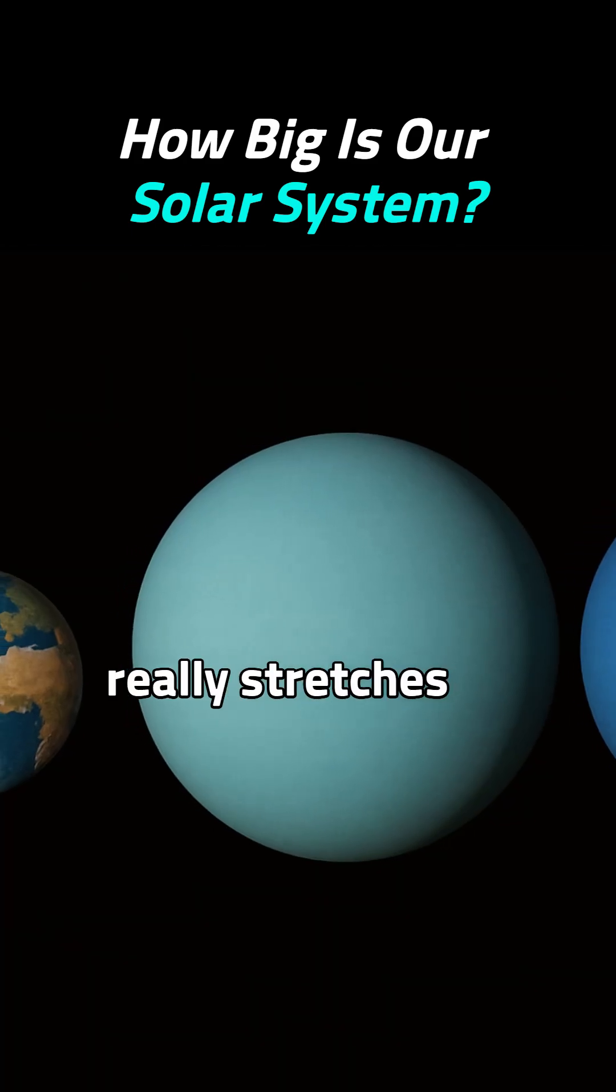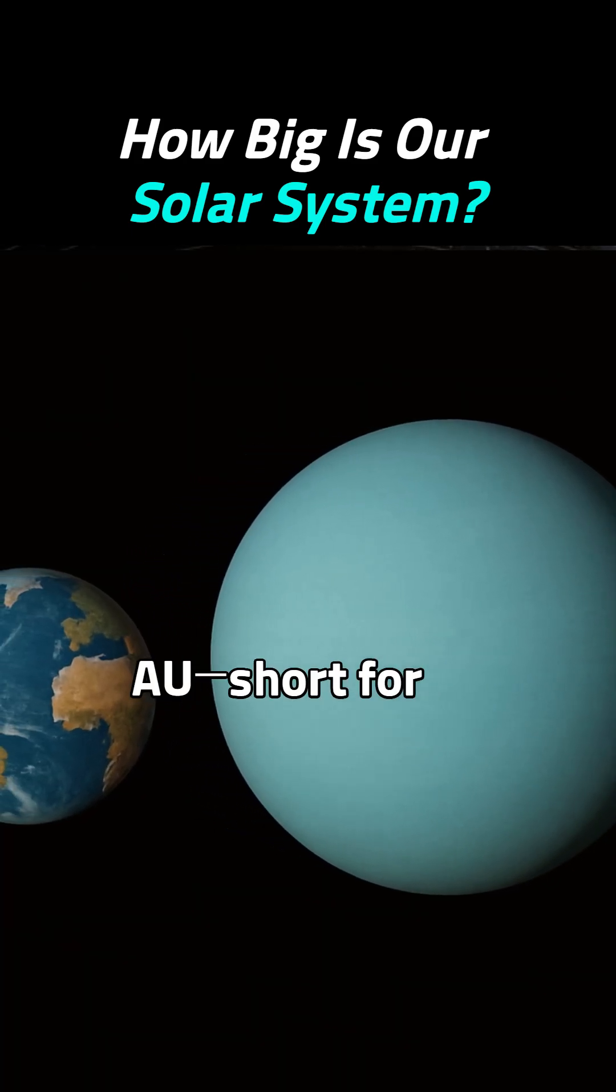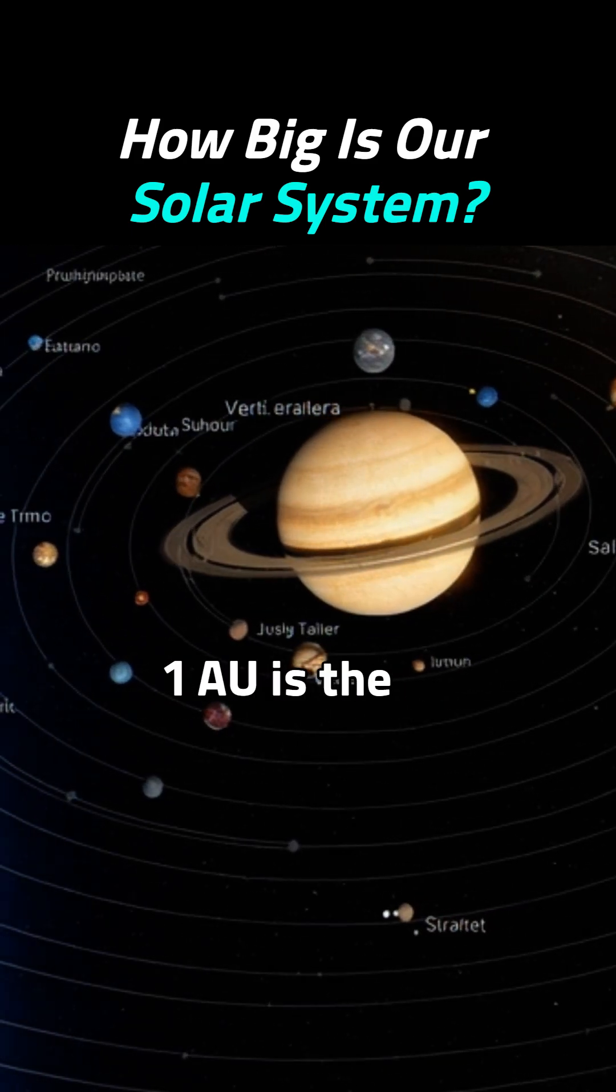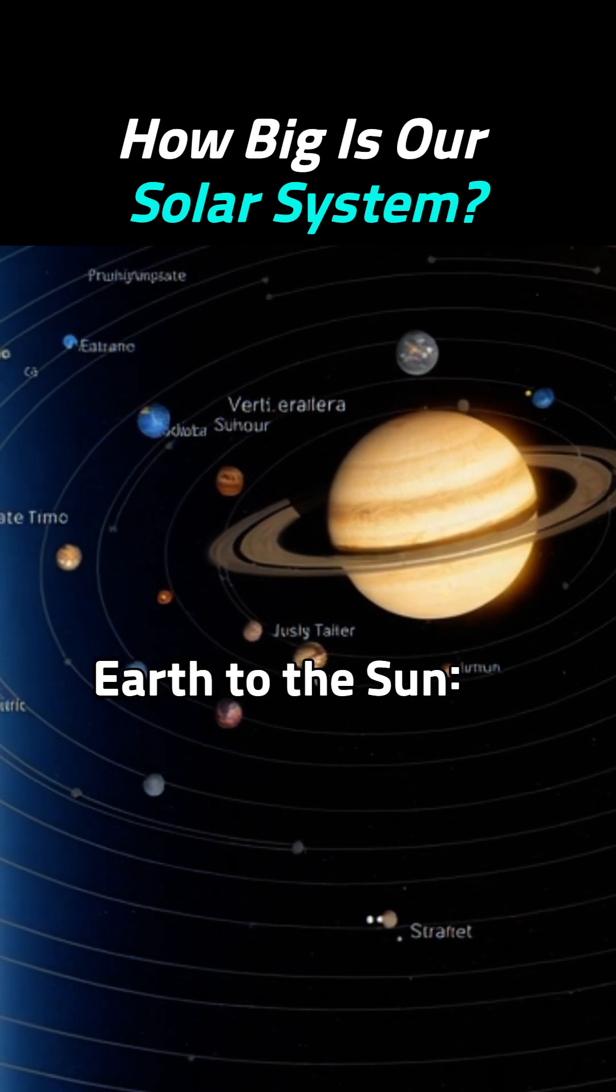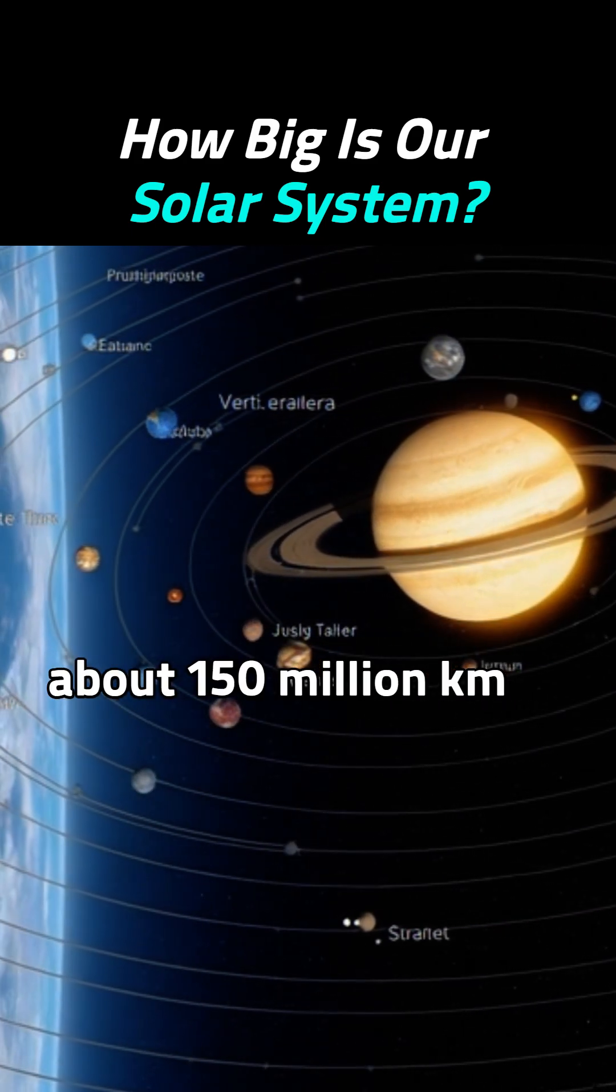Now here's where it really stretches. We use AU, short for astronomical unit, to measure space distances. One AU is the distance from Earth to the Sun—about 150 million kilometers.